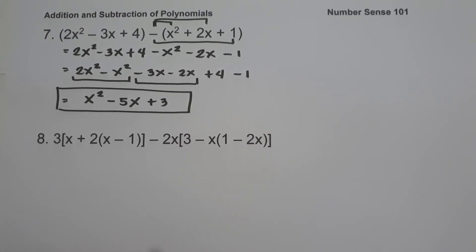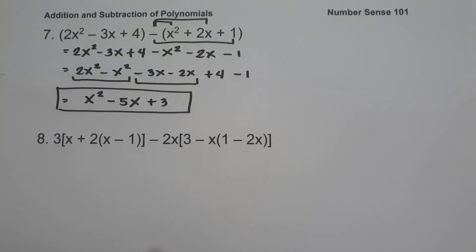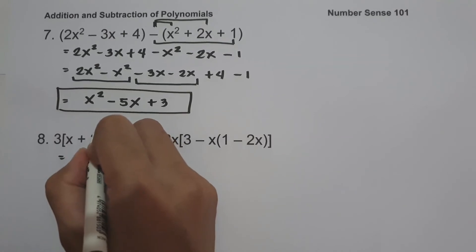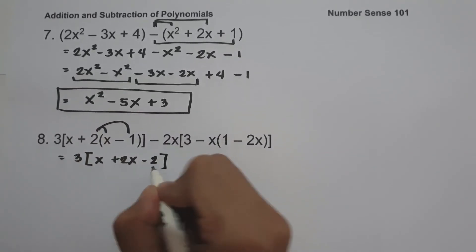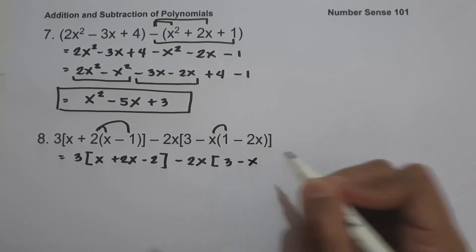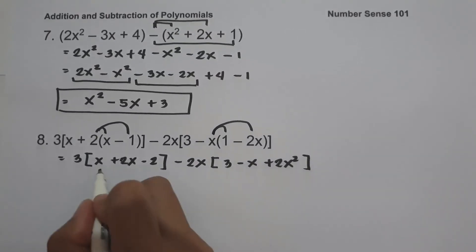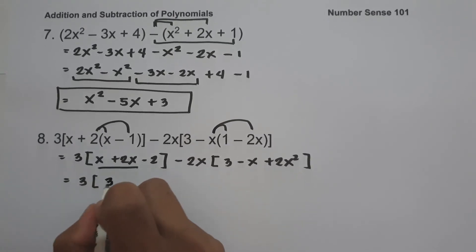On example number 8, we have 3 times the quantity x plus 2 times the quantity x minus 1, minus 2x times the quantity 3 minus x times the quantity 1 minus 2x. Before distributing, we simplify inside the parentheses first. So 2 times x is 2x and 2 times negative 1 is negative 2, giving us x plus 2x minus 2, which is 3x minus 2. For the second group, negative x times 1 is negative x and negative x times negative 2x is positive 2x squared.